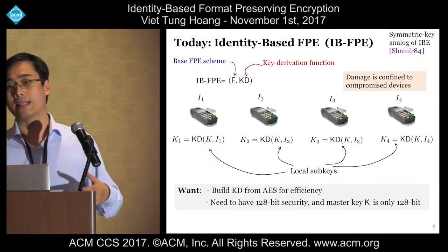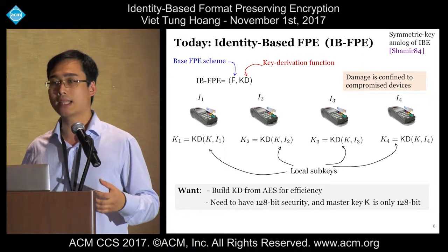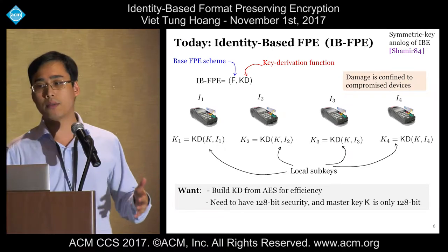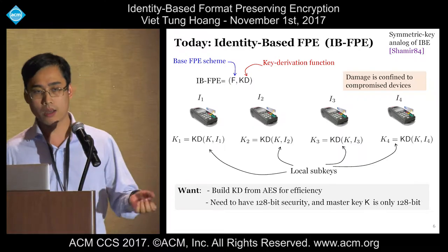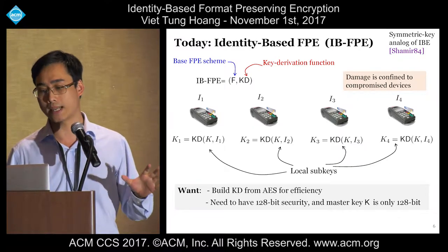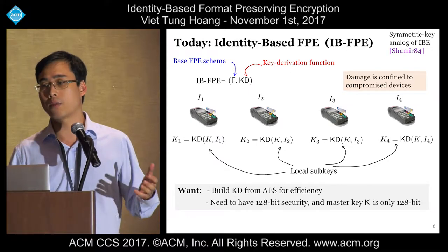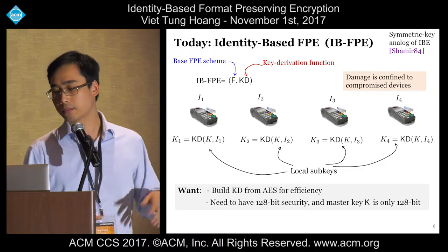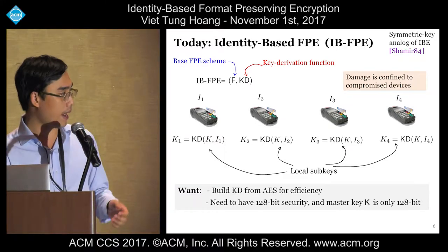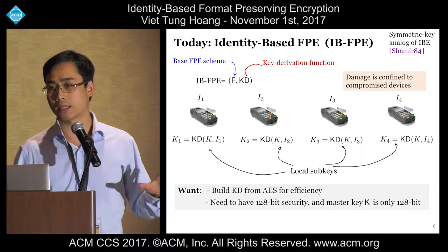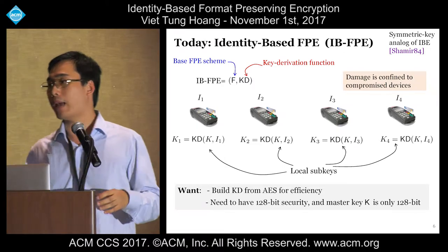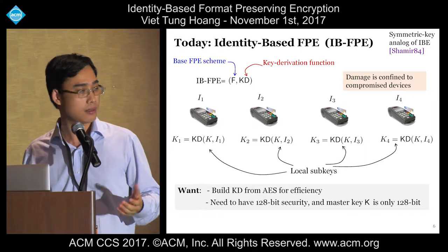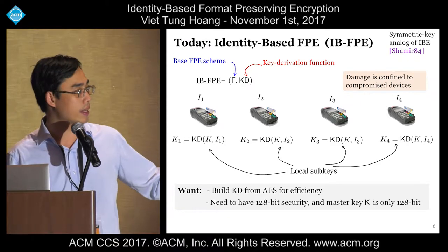Before we can design secure schemes, we need to understand what security means. I will begin by defining security notions for IBFPE. We then give generic attacks on any IBFPE scheme, generalizing the NSA attacks on FF2. These attacks suggest that if you want 128-bit security for IBFPE, your sub-key length must be at least 256 bits. We then give two constructions for IBFPE — one inspired by the design of DFF, a recent FPE proposal to NIST — and use our framework to analyze the security of DFF, formalizing its delegation security goal.